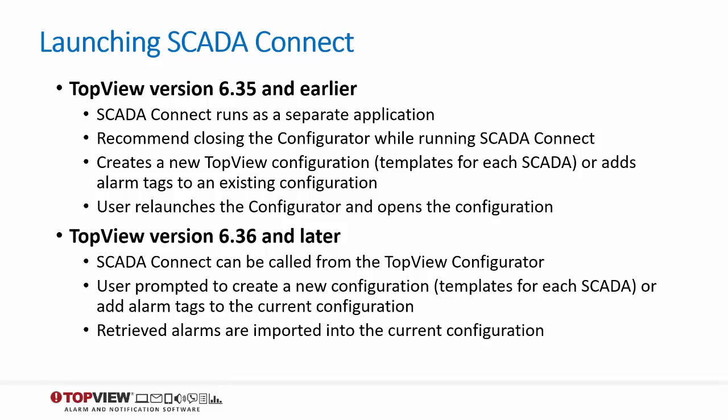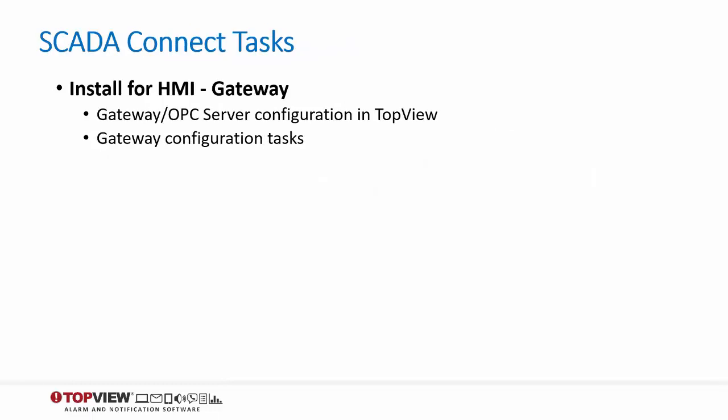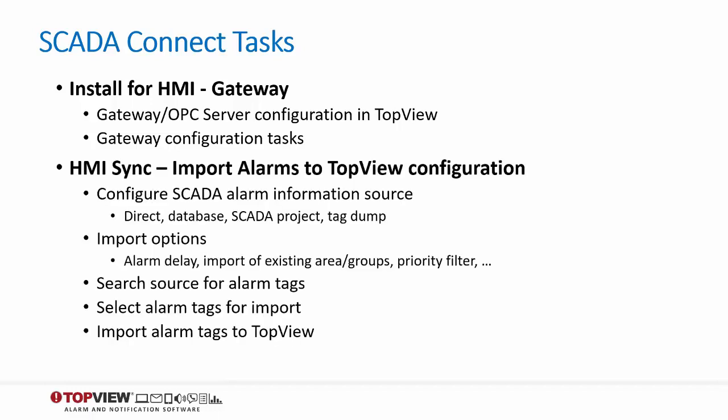The retrieved alarms are then imported into the configuration. The first task for the SCADA Connect user is to configure the gateway. This involves the configuration of the gateway server in Top View and may, depending on the SCADA, involve configuration steps of the gateway itself. Most users will only perform this step once. Once the gateway is configured, HMISync will be used to import alarms from the SCADA to a Top View configuration. Each SCADA alarm database is accessed in a specific way. Depending on the SCADA, this may be a direct connection to the SCADA runtime, accessing the SCADA alarm database or project, or a tag database dump file, which is usually a CSV. After selecting the desired import options, the user will be presented with a list of discovered SCADA alarms. After selecting the desired alarms for import, SCADA Connect will import these alarms into the Top View configuration.